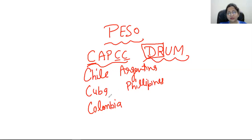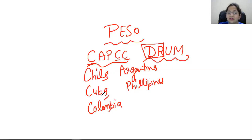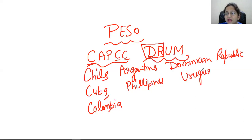Chile, Cuba, Colombia — three C's to learn. I have been in this field for twelve years making code words. I advise you to learn the three C's: Chile, Cuba, and Colombia — no confusion. Then Argentina, Philippines. DR is Dominican Republic, U from Uruguay, and Mexico. We have covered 16 countries with PISO.